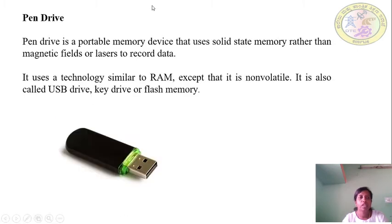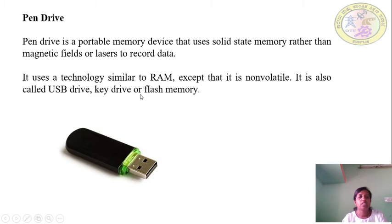Next, pen drive. A pen drive is a portable memory device that uses solid-state memory rather than magnetic fields or laser to record data. It uses a technology similar to RAM except that it is non-volatile, meaning once data is written it is retained. It is also called a USB drive, key drive, or flash memory.